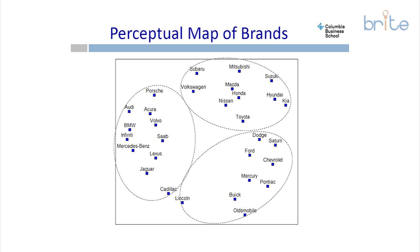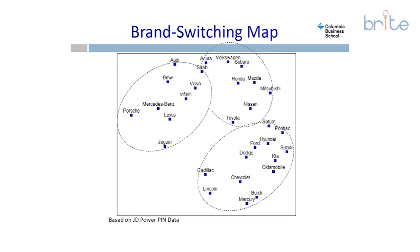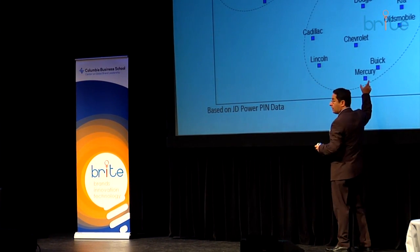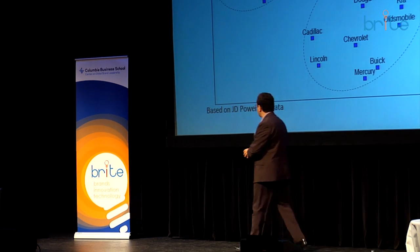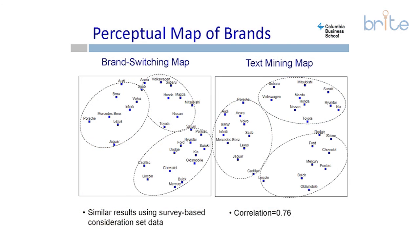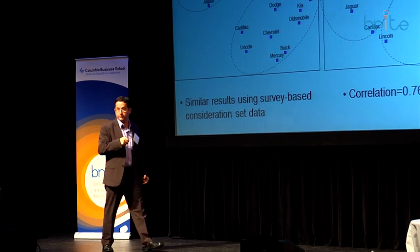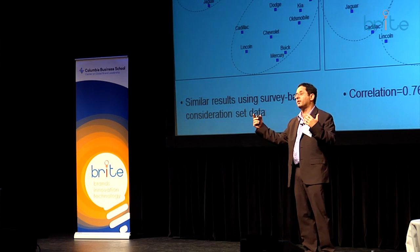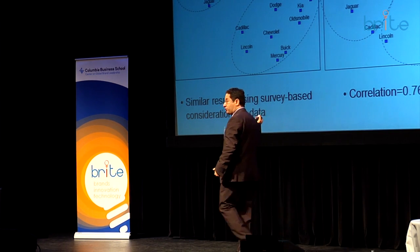In this perceptual map, brands that were mentioned frequently together appear closer to each other. We can compare this to sales data — here's the same map generated from trading in of one car for another, where brands appear close if they were traded for one another frequently. The correlation between these two maps is 0.76, and the groups are almost exactly the same. So there is a lot of similarity between the chatter on the web and the associative network, and the actual action of trading in cars.